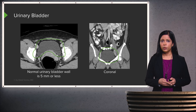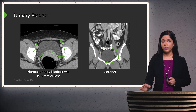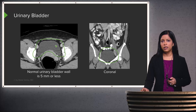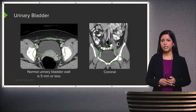The urinary bladder is seen within the pelvis as a fluid-filled structure. The wall is usually about 5 millimeters or less, visible on both axial and coronal CT scans.